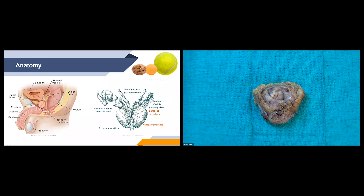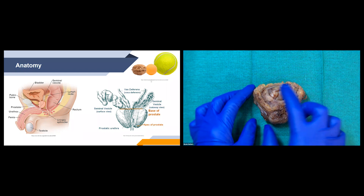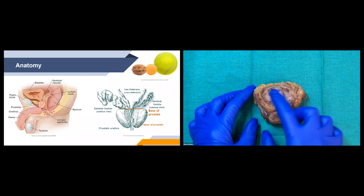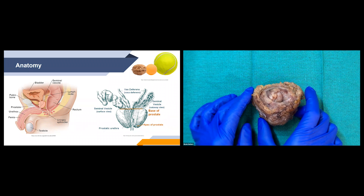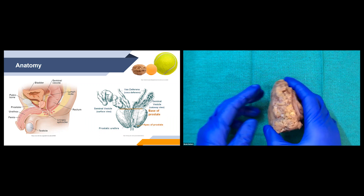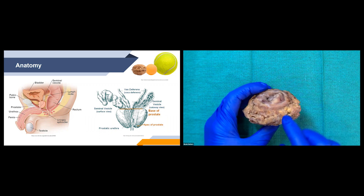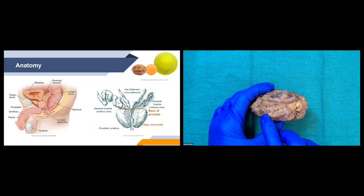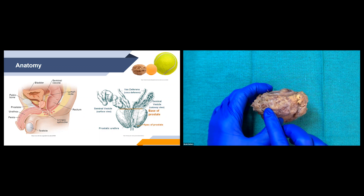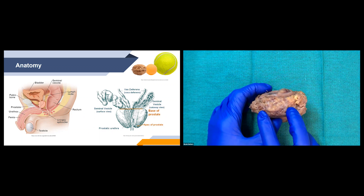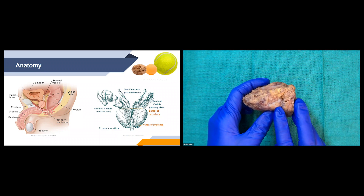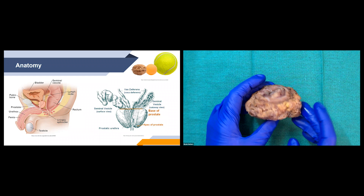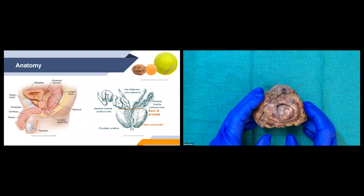With a radical prostatectomy specimen we get our prostate gland, and we'll also get a portion of the seminal vesicles as well as the vasa deferentia. Here you can see the little bits coming off — this one would be our left seminal vesicle and then our right seminal vesicle, which is a bit smaller.